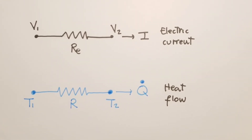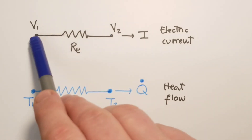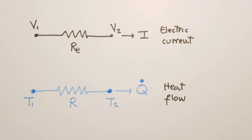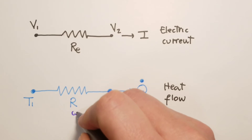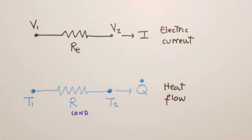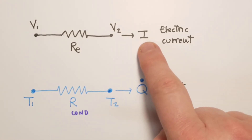Schematically, we represent electric circuits with V1 and V2 as the two potentials and an electrical resistance. In the same way, we represent heat flow with T1 and T2 as the two temperatures and R as the conduction resistance. Q is the heat flow, in full analogy with current in an electric circuit.